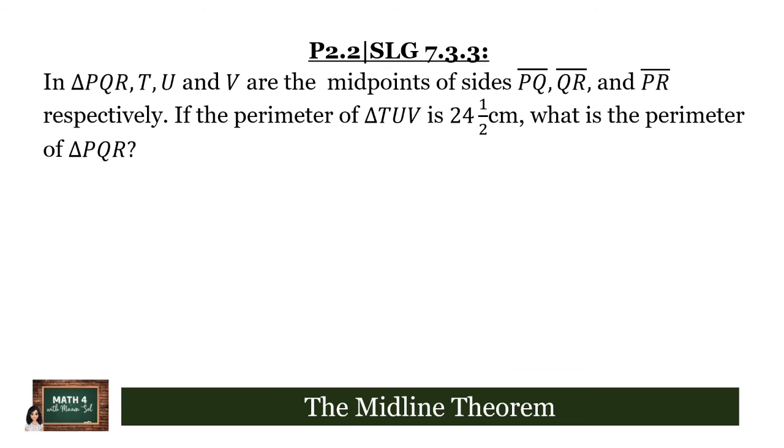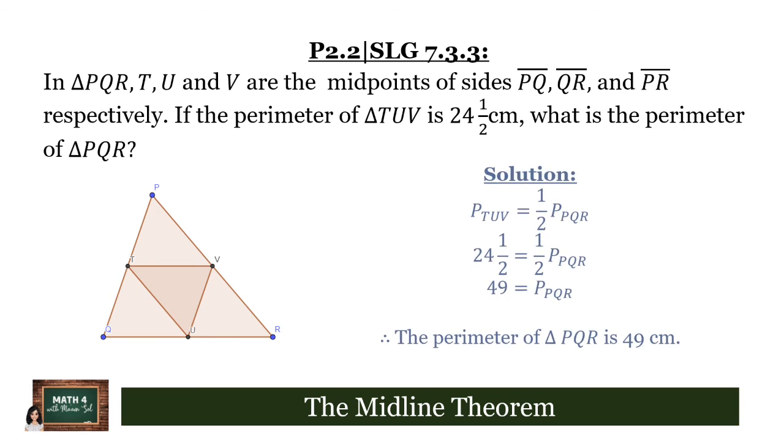So to easier visualize this one, let's try to draw triangle PQR and the midpoints T, U, and V. We now connect those points and we will have the midlines TU, UV, and TV. Now we know that since TU, TV, and UV are midlines, then the perimeter of triangle TUV is half the perimeter of triangle PQR.